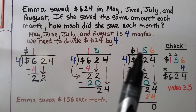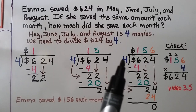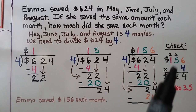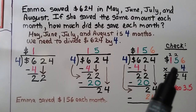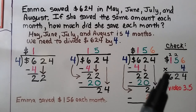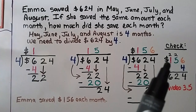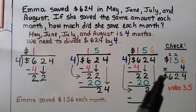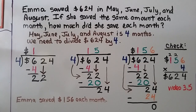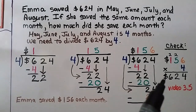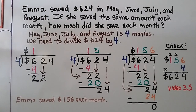To check it, we multiply $156 times the divisor, 4. We do 4 times 6, which is 24 — regroup the 2 and put the 4 down. Then 4 times 5 is 20, add the regrouped 2, that's 22 — regroup that 2 and put the other 2 down. Then 4 times 1 is 4, add the 2 regrouped, that's 6. We get $624, which was our dividend. So we know Emma saved $156 each month.